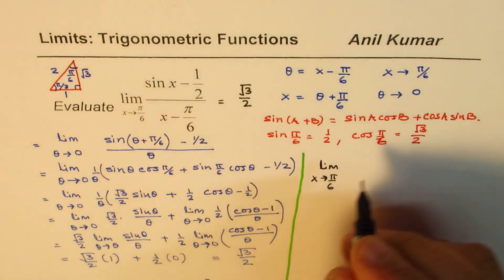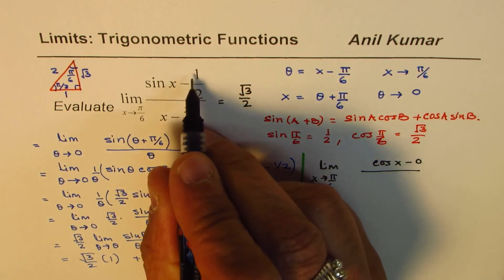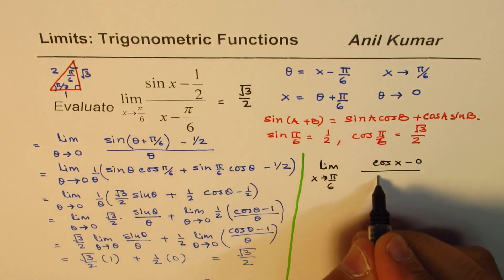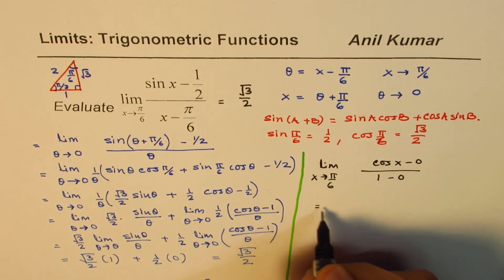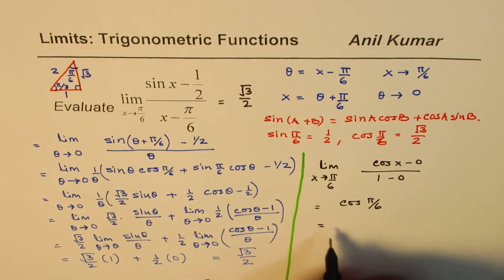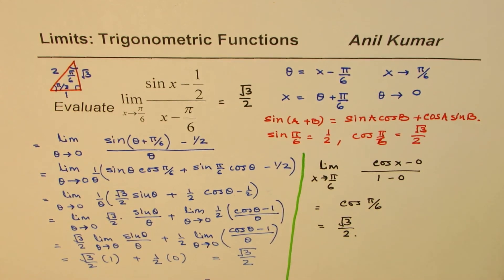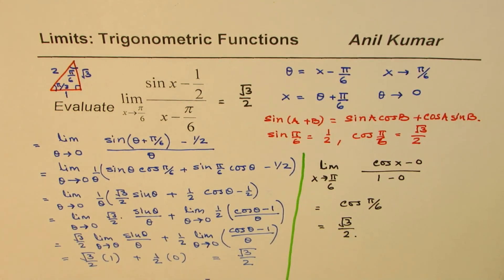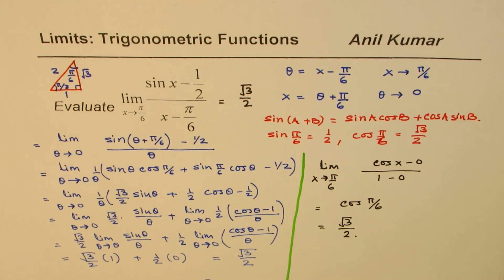Using L'Hôpital's rule: the derivative of sin x is cos x, and the derivative of (x - π/6) is 1. So the limit becomes cos x / 1 as x → π/6, which equals cos(π/6) = √3/2. Either method gives the same answer. I'm Anil Kumar — I hope that helps. Thank you and all the best.